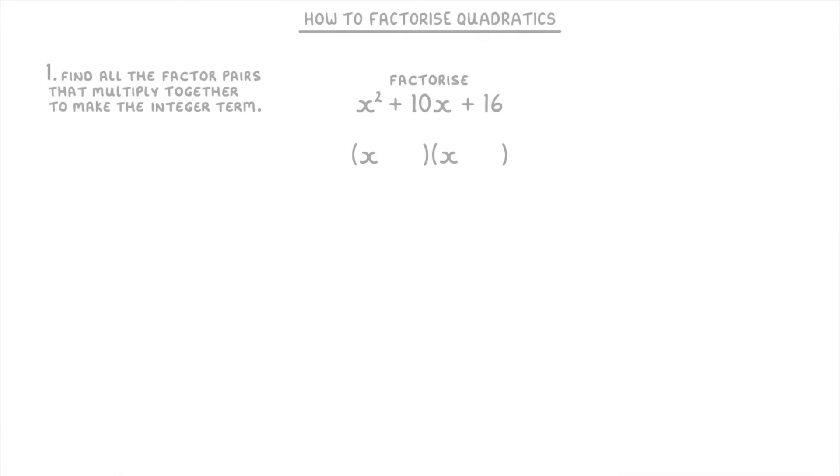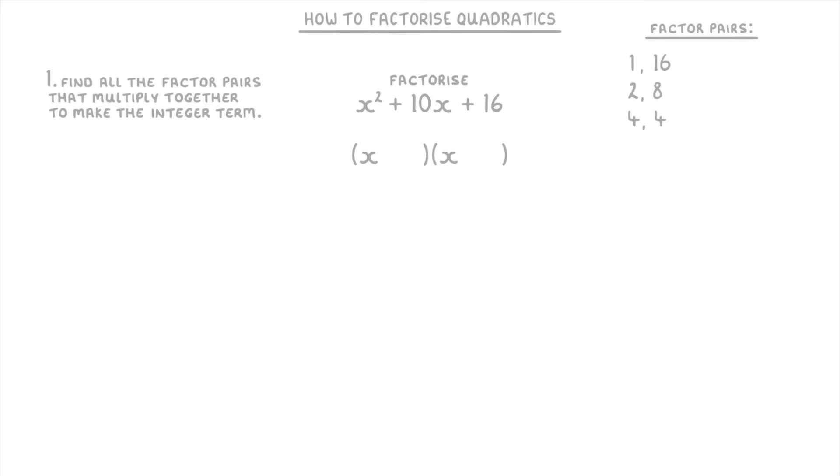The first step is to find all the factor pairs that multiply together to make the integer term, which is just the term that doesn't have any x's, so in this case the 16. So those factor pairs would be 1 and 16, 2 and 8, and 4 and 4, because all of these pairs of numbers multiply together to make 16. And if I were you I would actually write out all the factor pairs on your paper like we have here.